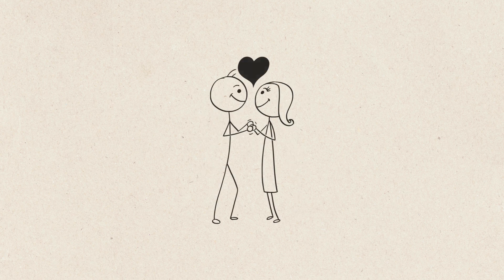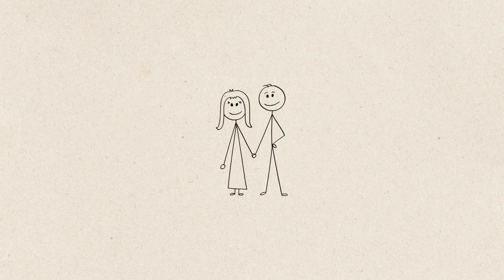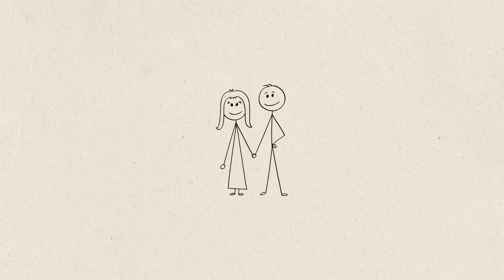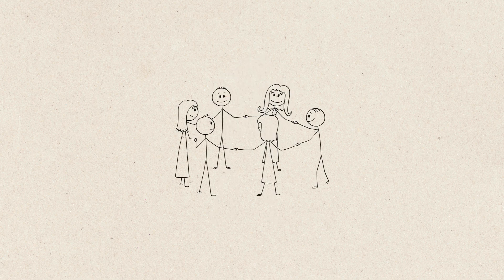Attachment. This is the glue that holds long-term relationships together, fueled by oxytocin, also known as the love hormone, and vasopressin. These chemicals deepen emotional bonds and create a sense of security. It's why couples who have been together for years still feel connected. It's biology reinforcing that bond.